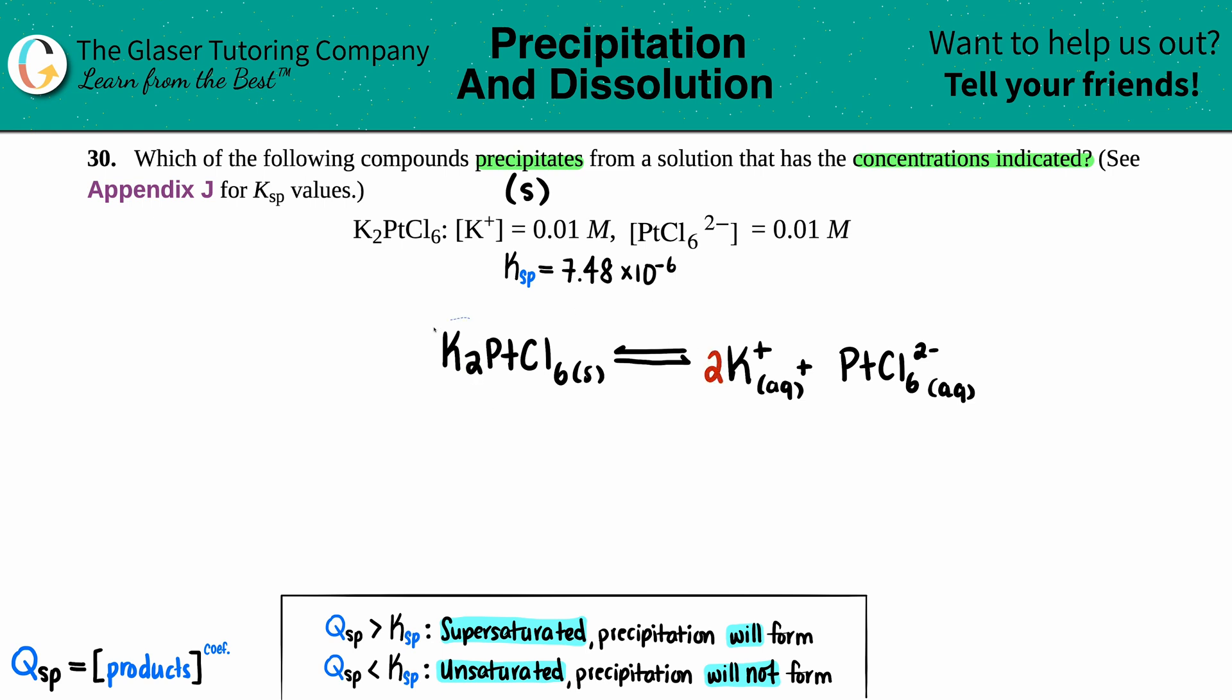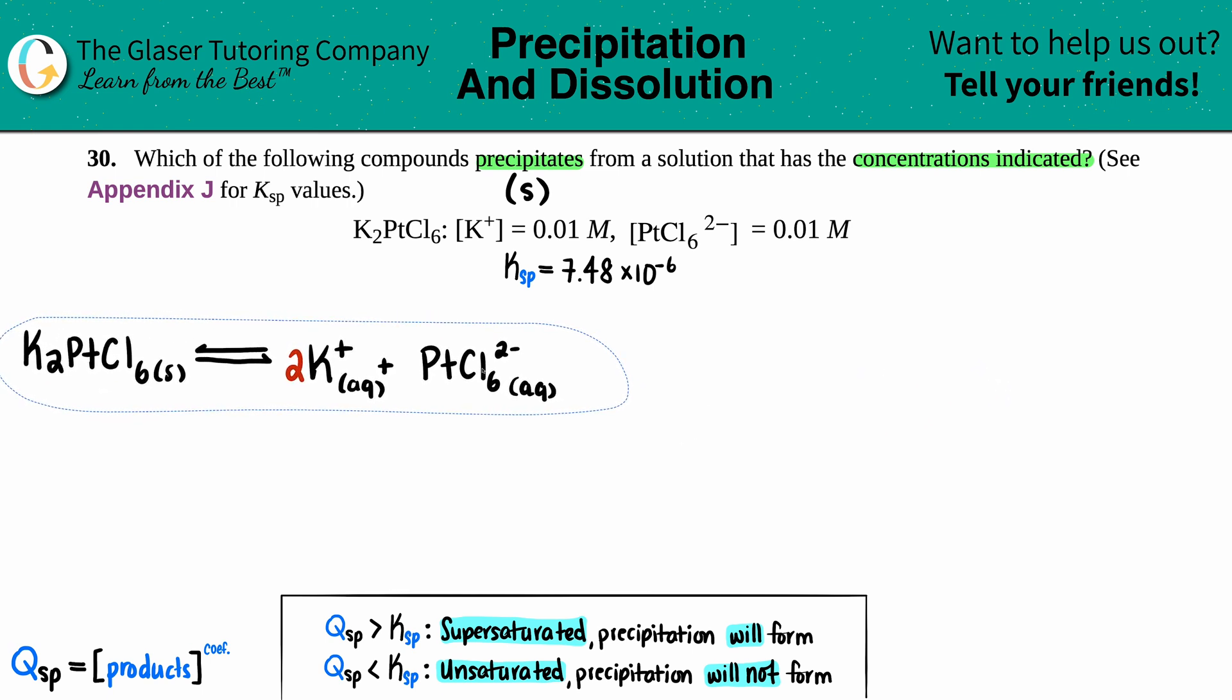Next thing I'm going to do is just write out how much we have of each. They told us that for all the potassium I have 0.01 molarity. Keep in mind that even though you see a two here, you do not multiply this by two. Whatever they tell you you got, that's what you have. So for all the potassium I have 0.010 molarity, and also for the PtCl6.